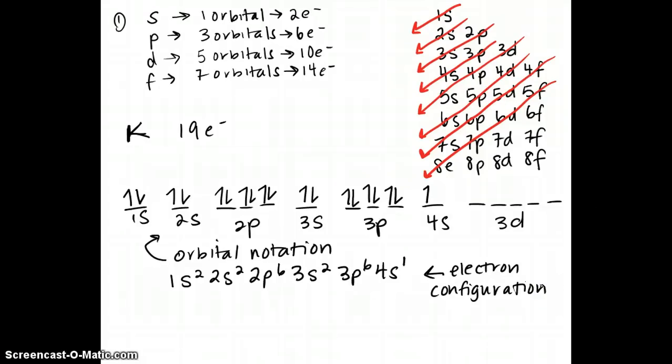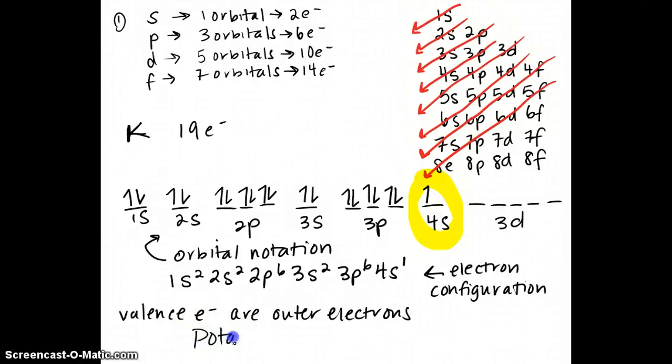If I'm looking for the number of valence electrons, valence electrons are outer electrons. So I look for my highest energy level, which we refer to as floors in our hotel analogy. My highest one here is the four. And so in this case, potassium has one valence electron, and it happens to be the 4S electron.